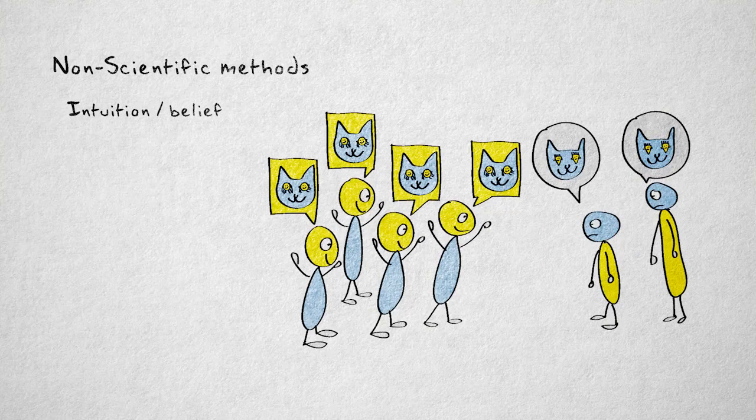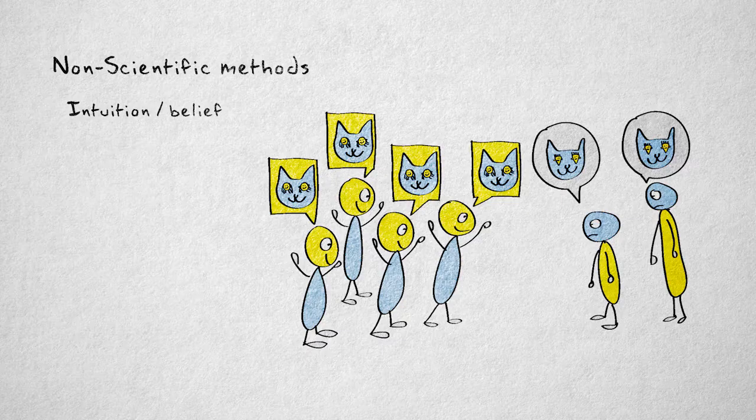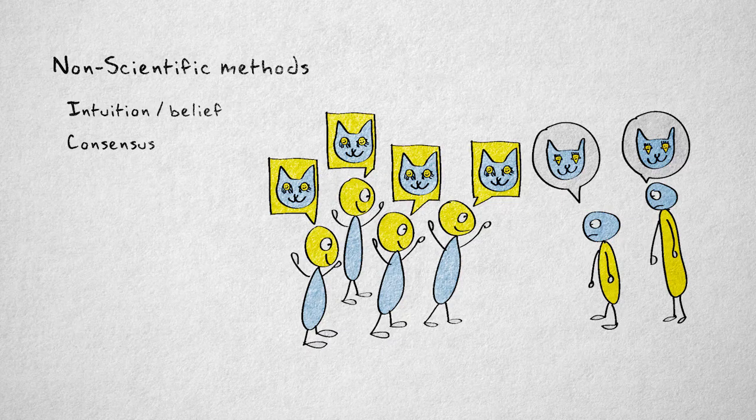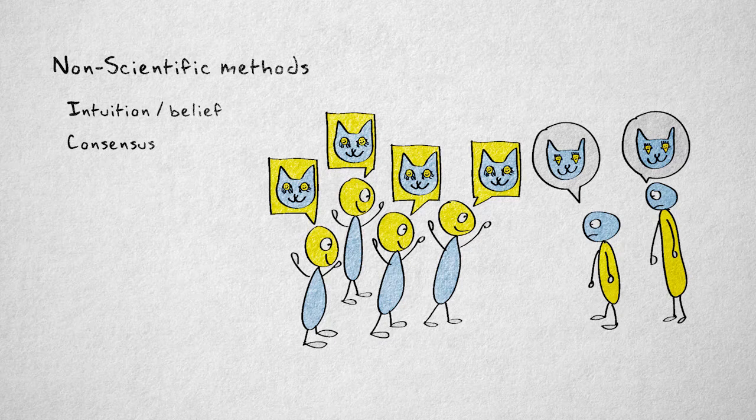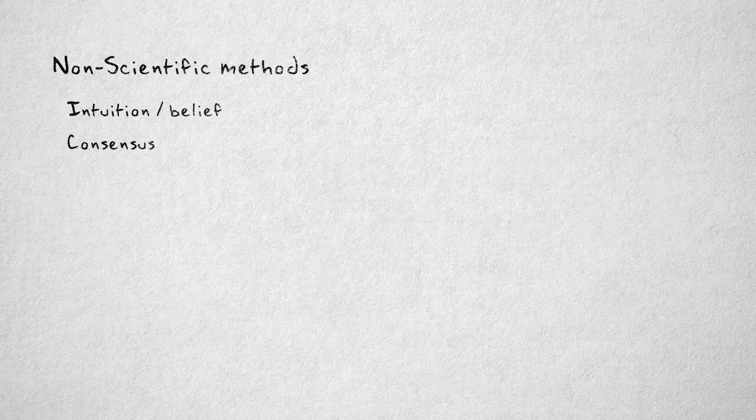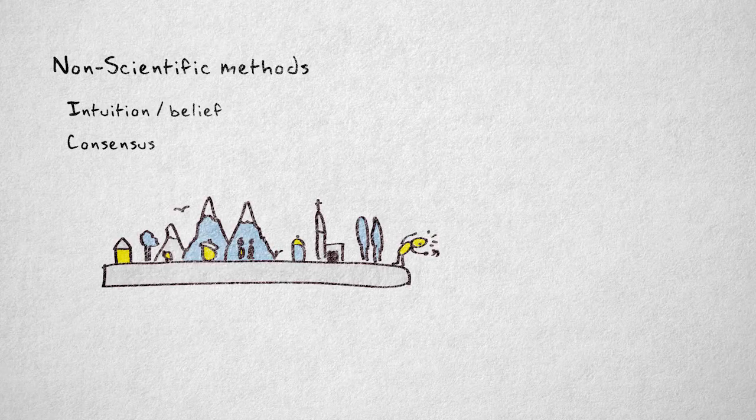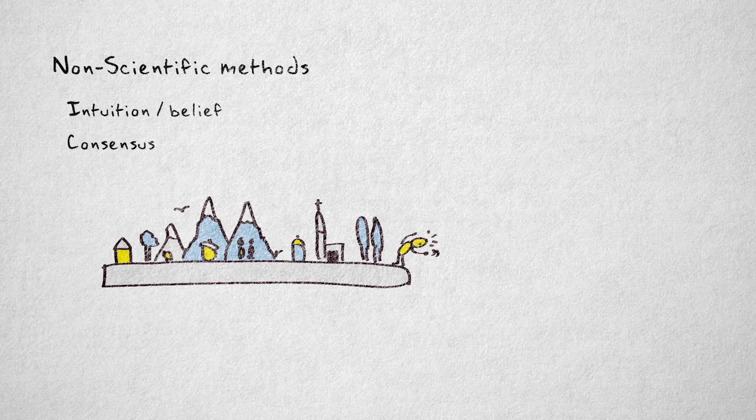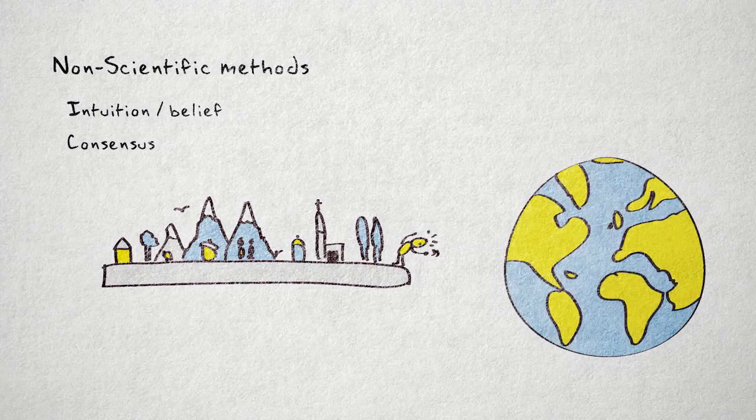We could count the number of supporters for each belief and require a majority or a consensus. But this isn't a very solid basis for knowledge either. Just because most people accept something as true, doesn't mean it is true. For centuries, practically everybody thought the earth was flat. Turns out they were wrong. It's round.